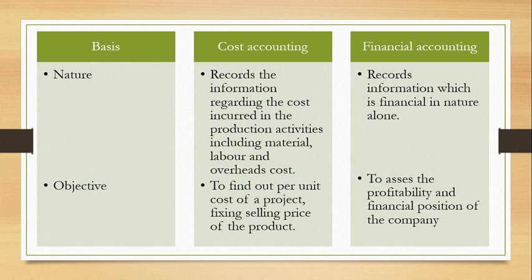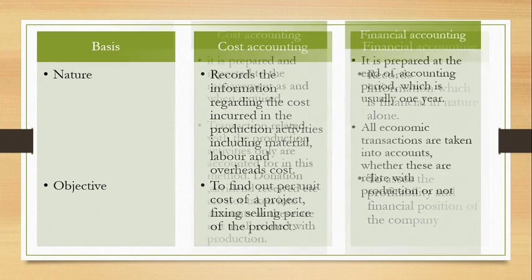Now on the basis of nature: in cost accounting, recording is done on the basis of material, labor, and overhead — the cost is classified and accounting entries are made accordingly. In financial accounting, items of a financial nature are included. The objective was already mentioned: financial accounting is used to determine the financial position of the company.